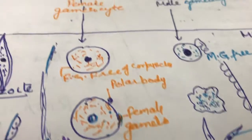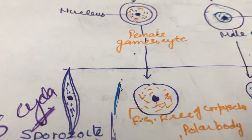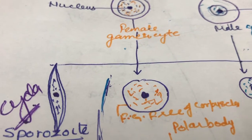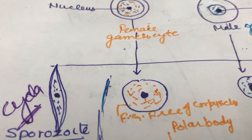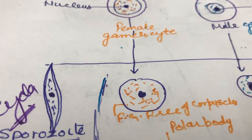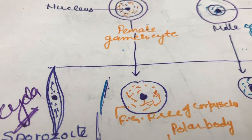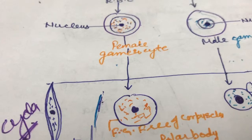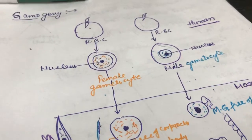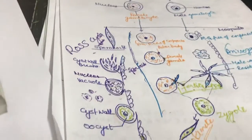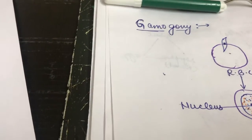That means in this organism there are two types of alternation of generation. One is alternation of generation like asexual and sexual generation, and second is alternation of host. Overall, this is Plasmodium vivax life cycle.